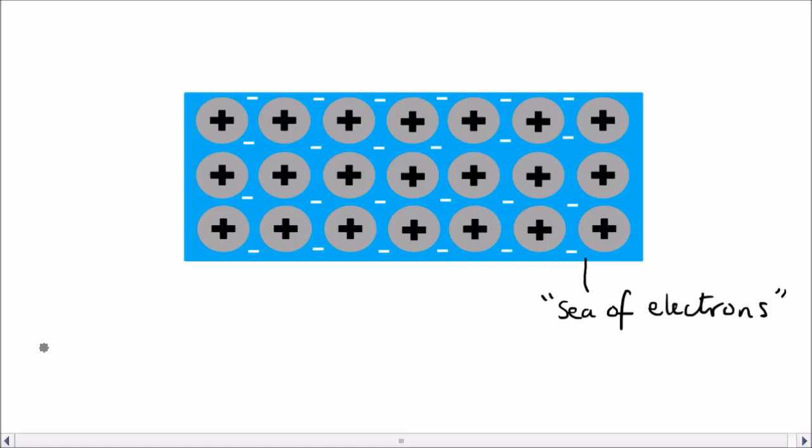Metallic bonding is actually very strong and it means that metals have high melting and boiling points. So these are some of the characteristics of metals.